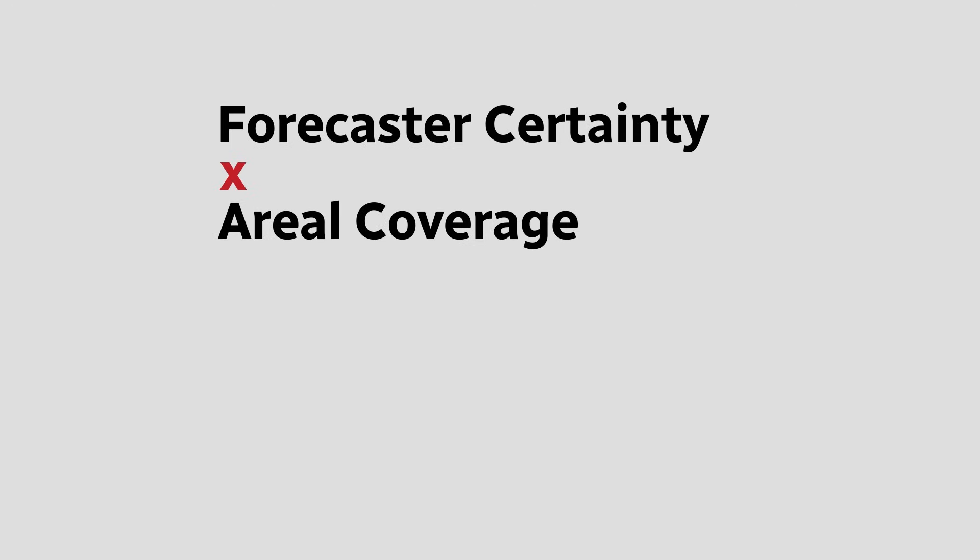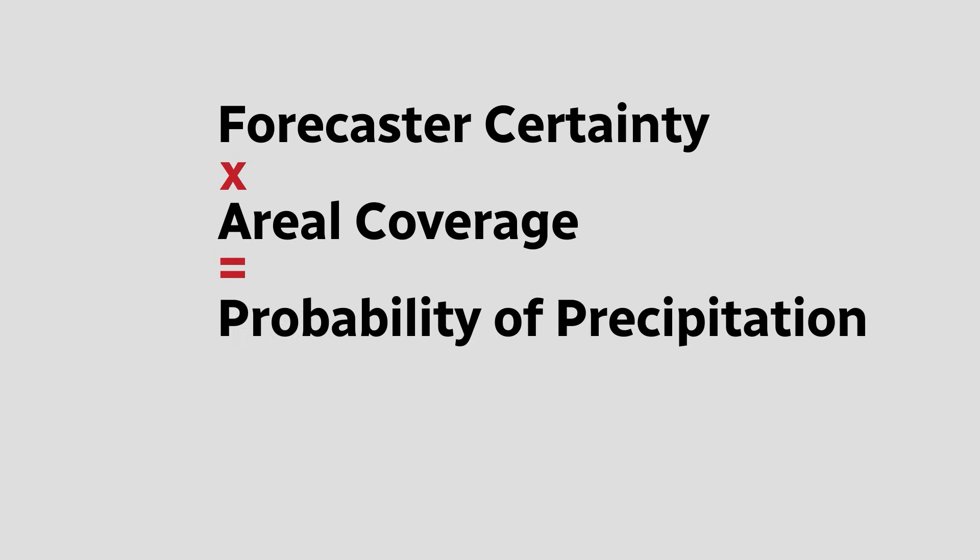The answer is, it's a simple formula: forecaster certainty times aerial coverage equals probability of precipitation, or POP.